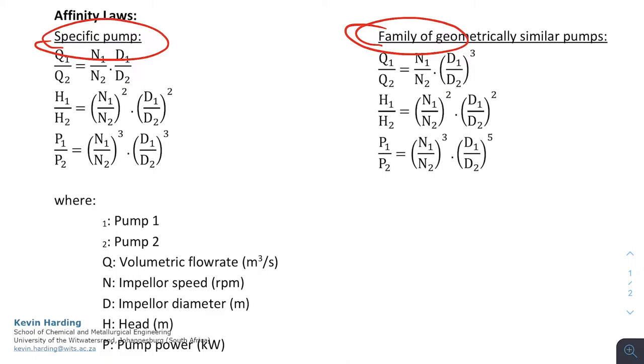The specific pump is fairly easy. It's just N on N, D on D. The second one is squared, and the third one is cubed. Please note, when it's a family of pumps, the power values are not the same.